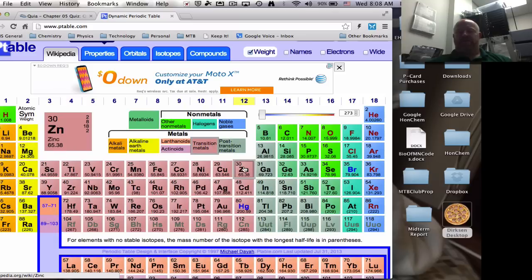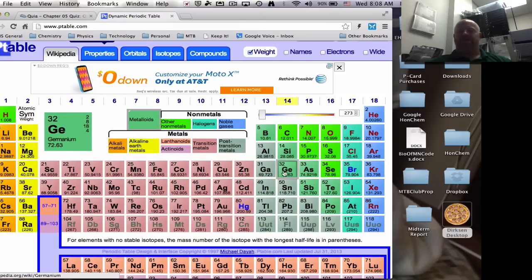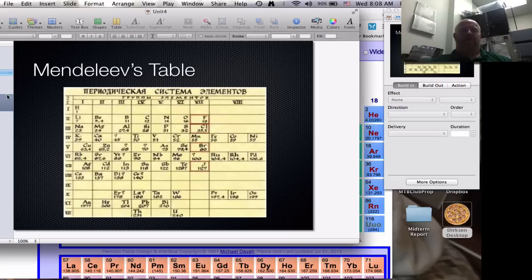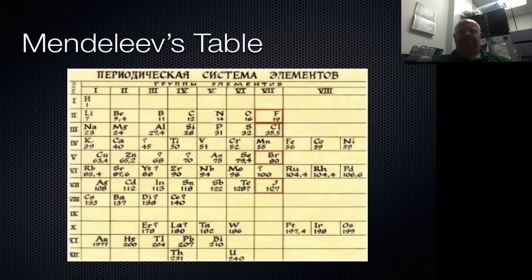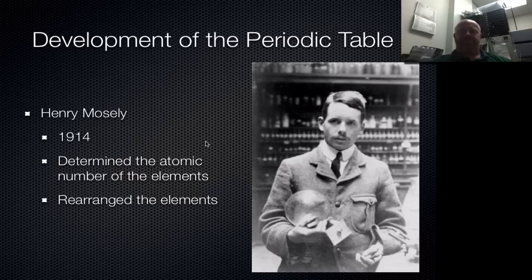The same thing applies between zinc and arsenic. We did not know about gallium or germanium, and Mendeleev predicted these elements would be discovered. So not only organizing the table, but also being able to predict future elements was a pretty impressive accomplishment for Mendeleev in the late 1800s.